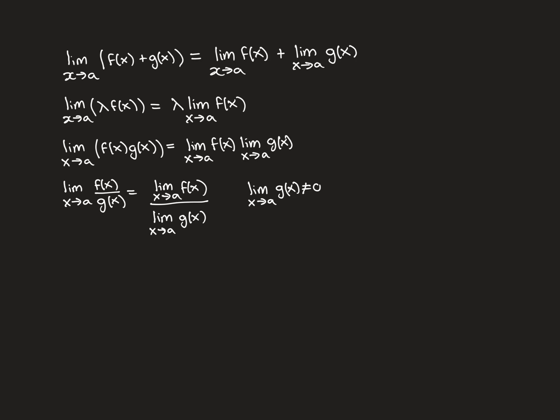In this final part of the video we're going to discuss the Algebra of Limits results for limits of functions. We're assuming that we have two functions f(x) and g(x), and that the limit as x approaches a of f(x) exists and the limit as x approaches a of g(x) exists. The Algebra of Limits results are about creating new functions from these pre-existing ones using algebraic operations, and then certain equalities hold true about the limits of these new functions.